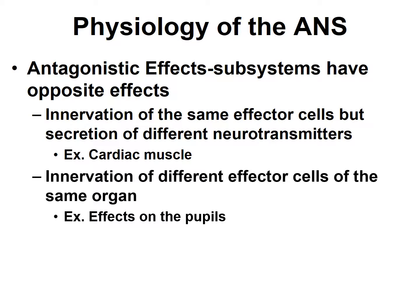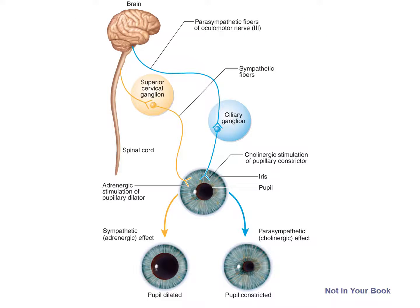Sometimes they have different effects because they innervate different effector cells of the same organ. For example, that is what occurs in the pupils. Let's examine how the sympathetic and parasympathetic subsystems have antagonistic effects on an organ by innervating two totally different cells.